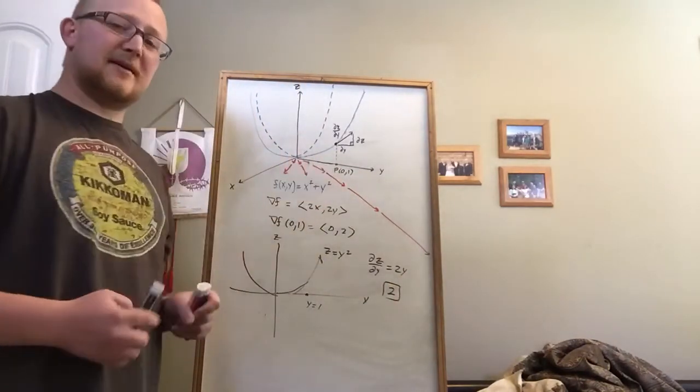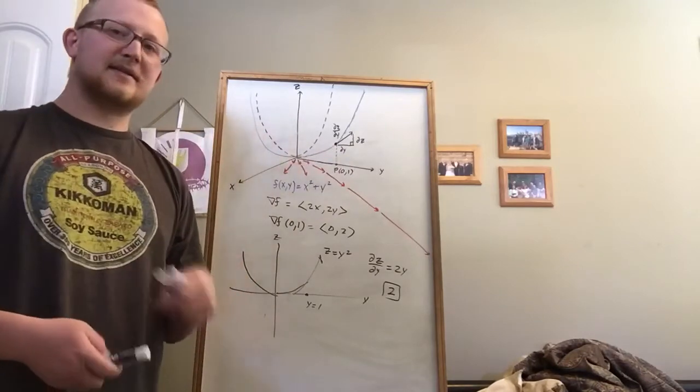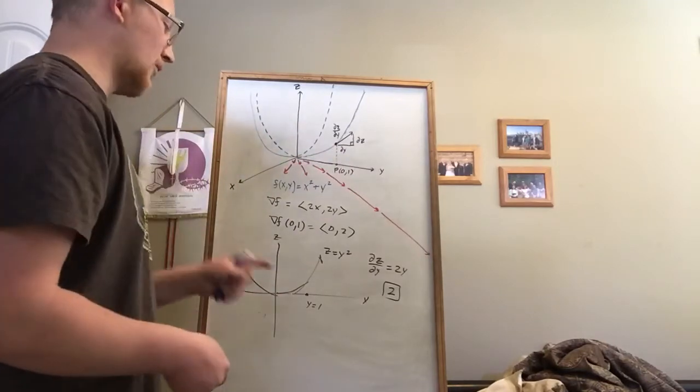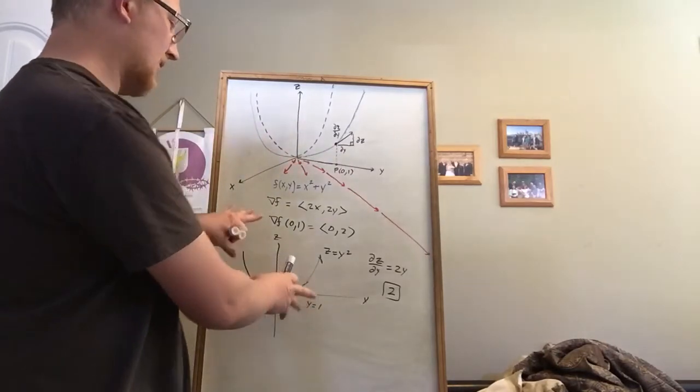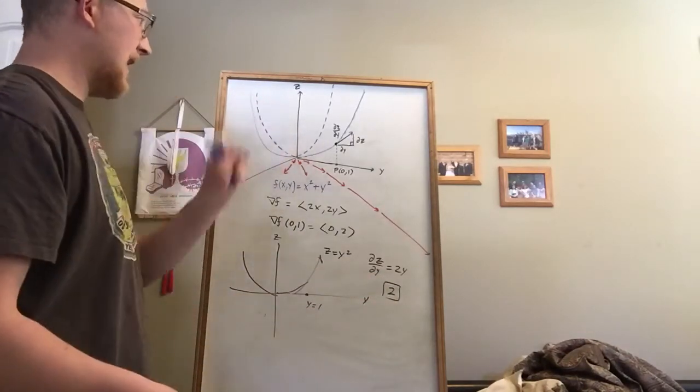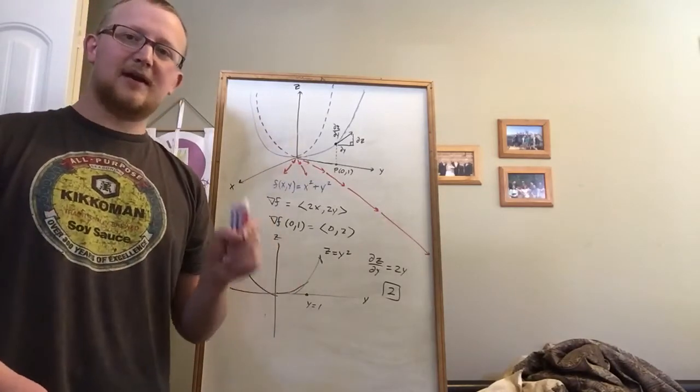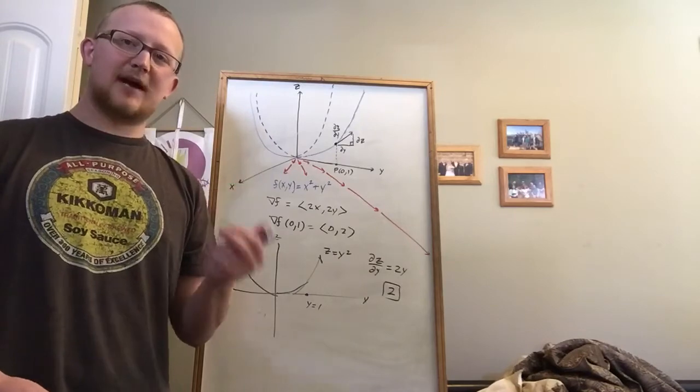Now we just did the same thing with the gradient. You'll notice that the point I picked had no x components, which was just to kind of compare it to our 2D world that we're so used to. But in fact, the gradient will always tell you the rate of change in the fastest directions.